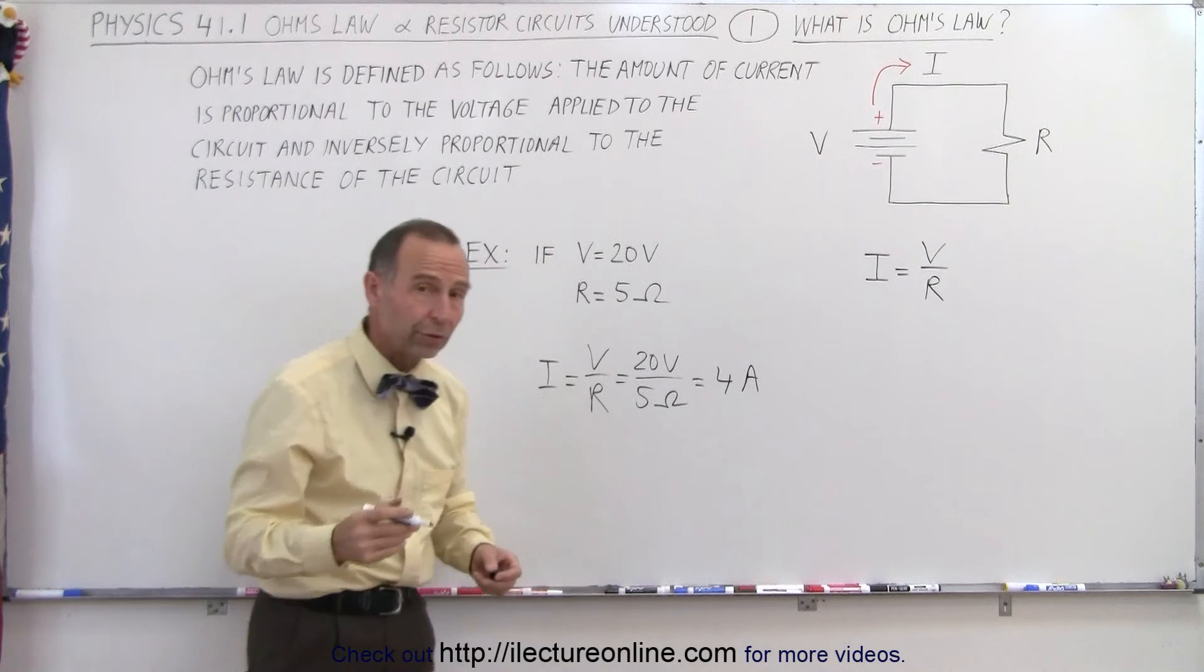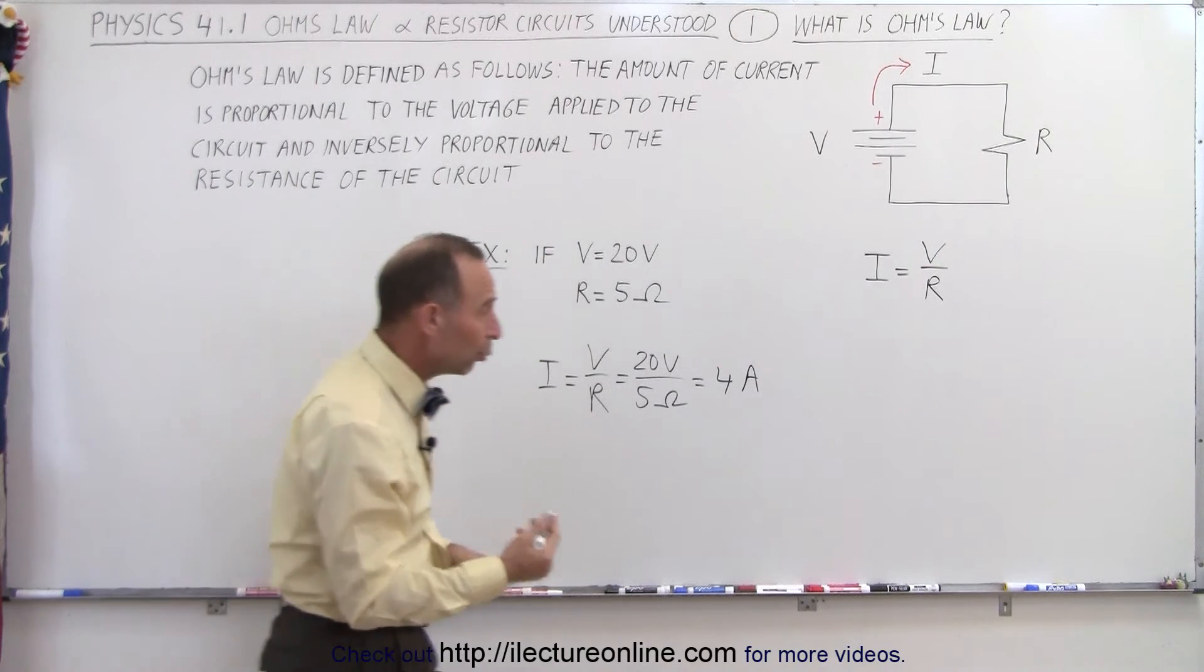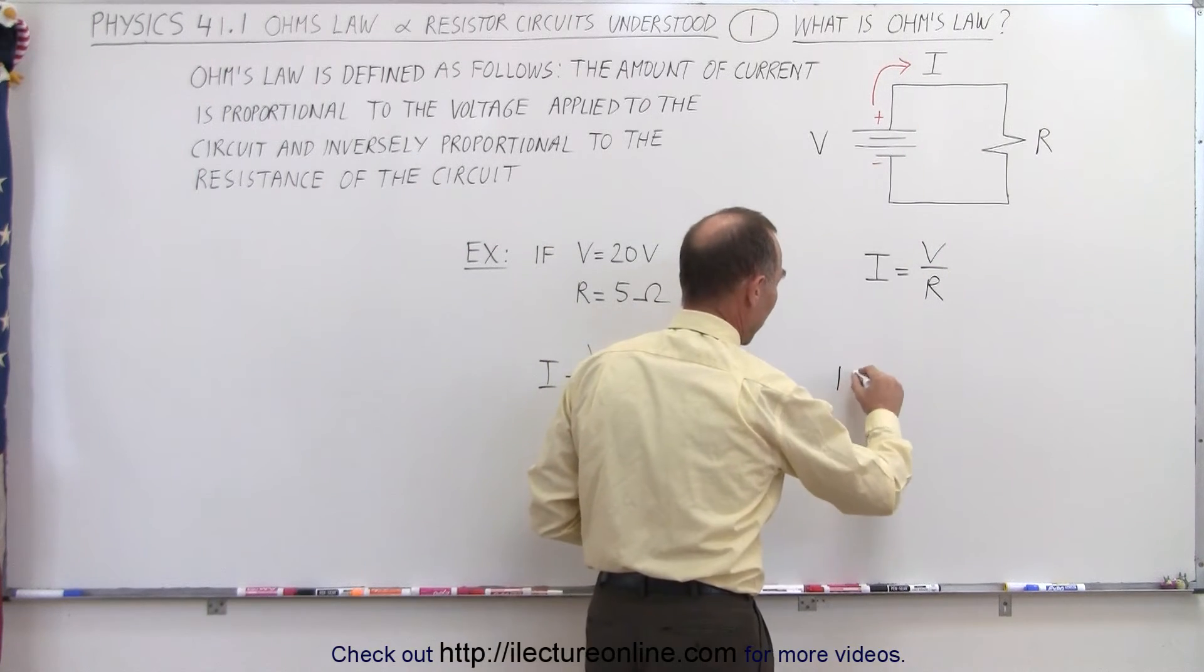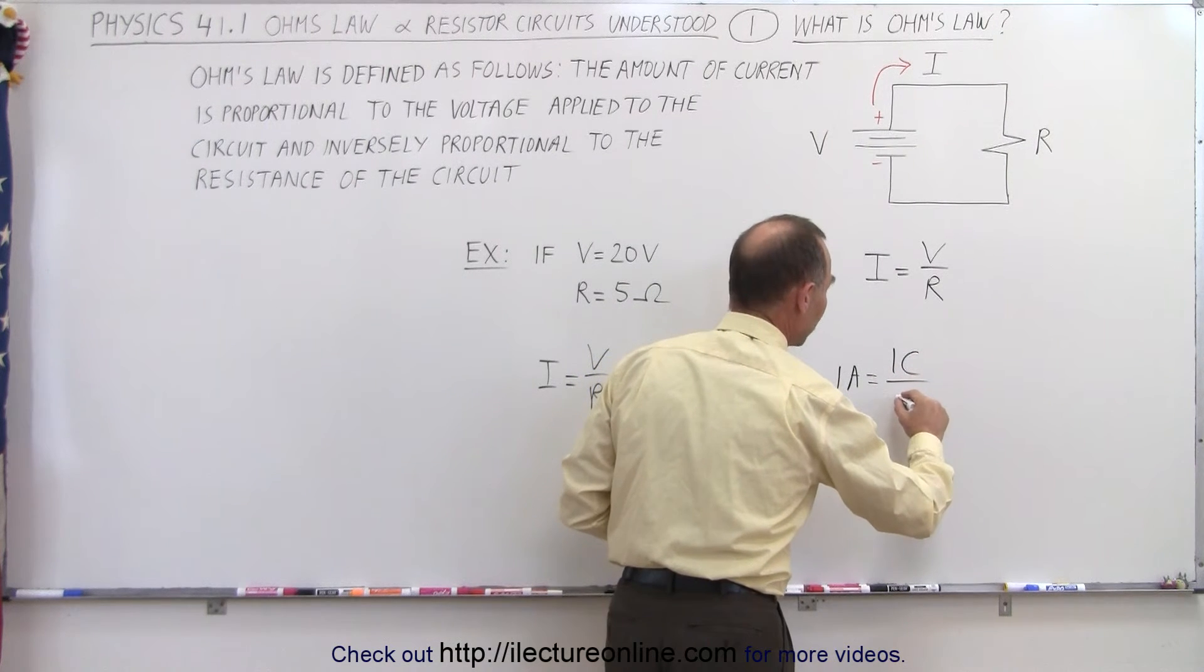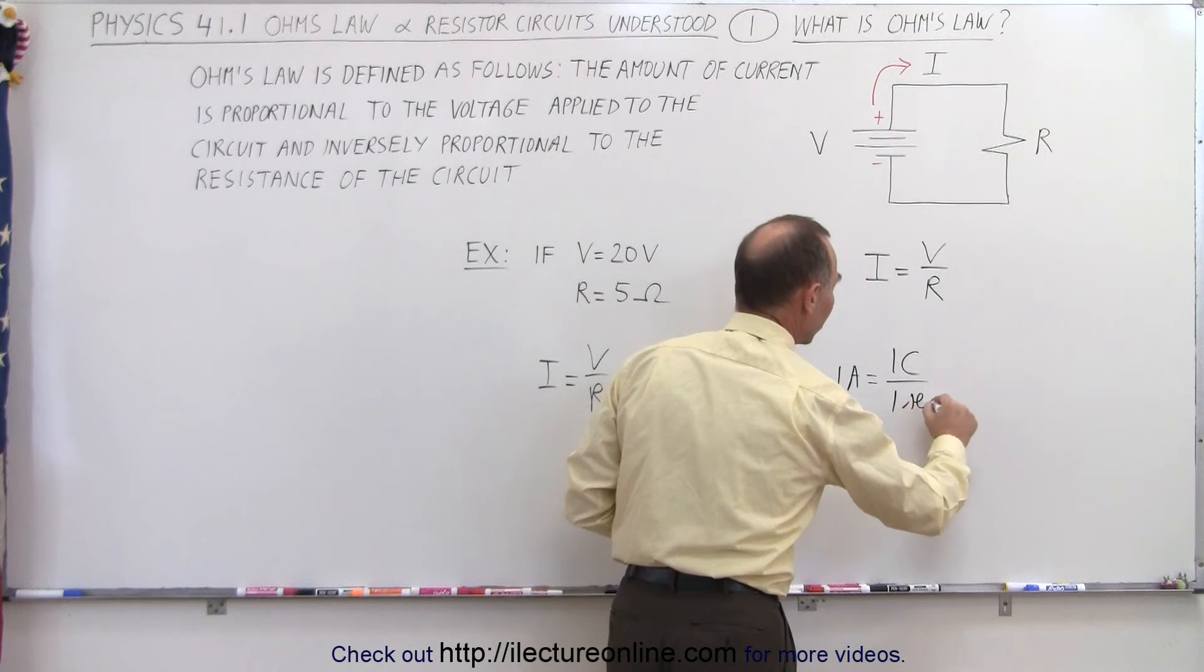And indeed, the units for current is amps and amp is 1 coulomb per second. So 1 amp is defined as 1 coulomb of charge flowing past a given point in the circuit in 1 second.